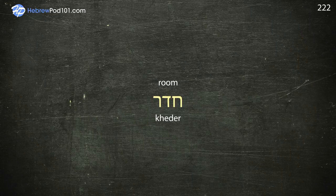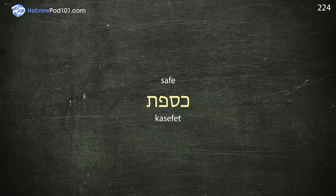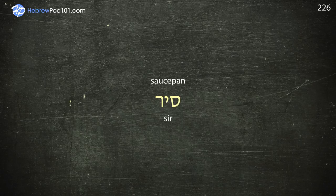Rural area — Ezoom. Safe — Kasefet. Sandpaper — Niyar Zchuchit. Saucepan — Sir. Saucer — Zalachat.